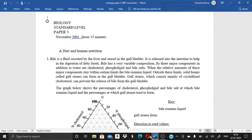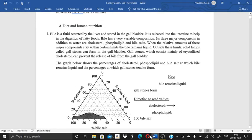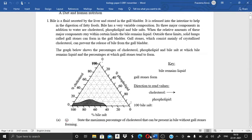When the relative amounts of these major components stay within certain limits, the bile remains liquid. Outside these limits, solid lumps called gallstones can form in the gallbladder. Gallstones, which consist mainly of crystallized cholesterol, can prevent the release of bile from gallbladder. The graph below shows the percentage of cholesterol, phospholipid and bile salt at which bile remains liquid and percentages at which gallstones tend to form.